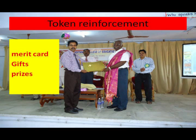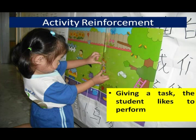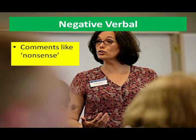The fourth component is token reinforcement. It means that the teacher gives a task, work, duty, or job that the students like to perform. The sixth component is negative verbal. It means the teacher saying some comments like nonsense, how dare you, and so on.